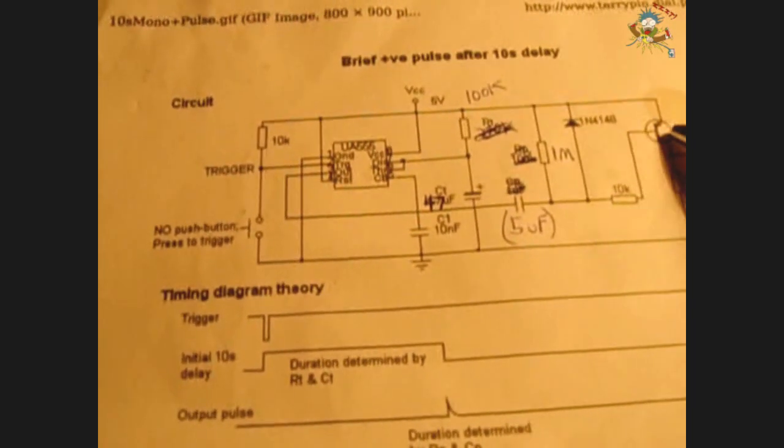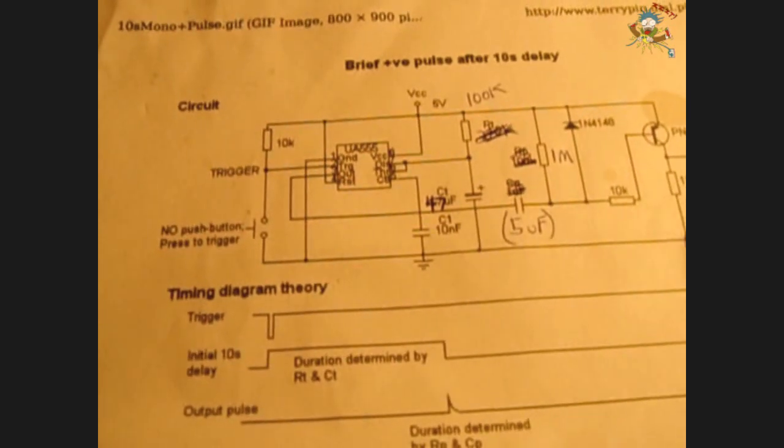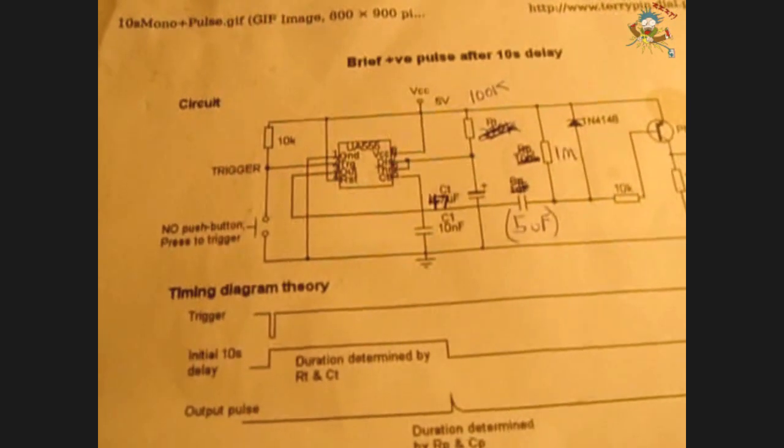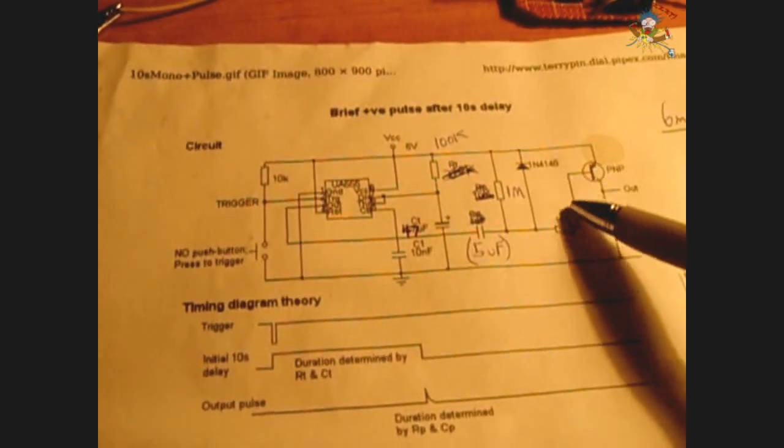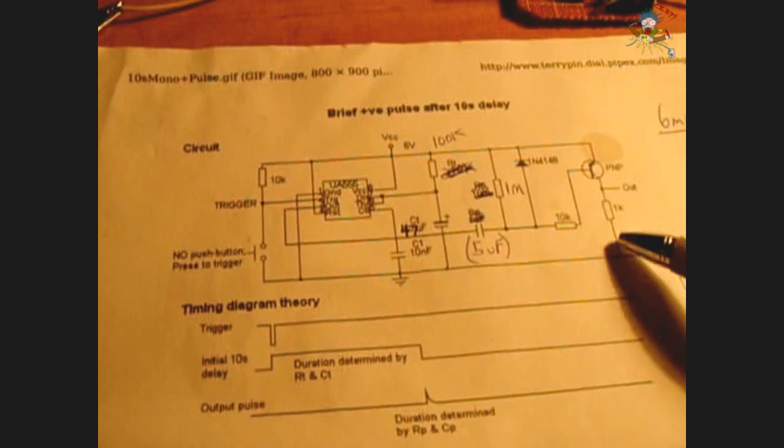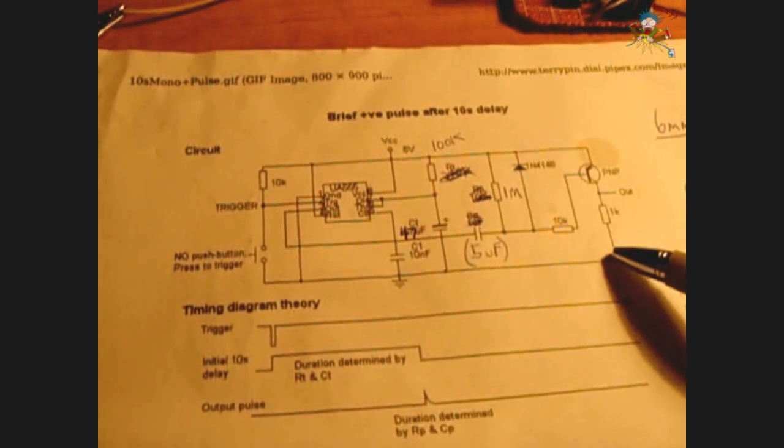Now the way this one works here, once this PNP turns on when this becomes negative, power will flow and it will be held back at this point by the 1k. And then you can have power going out from that point between the collector and the resistor to trigger another circuit.